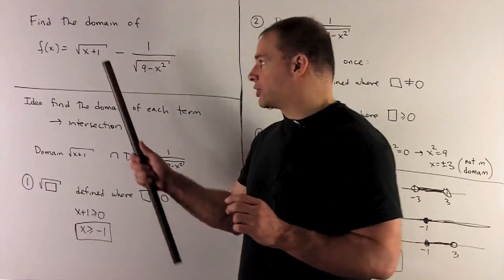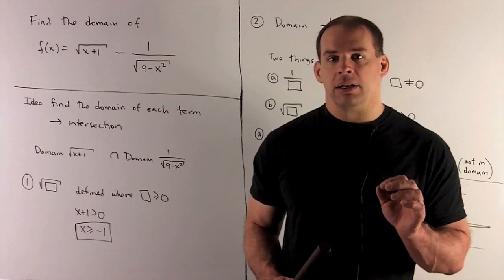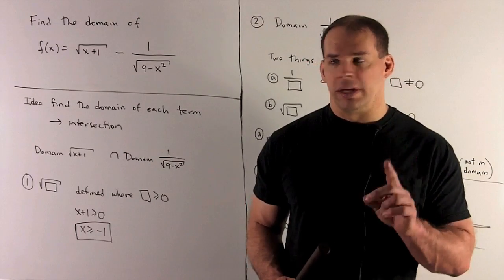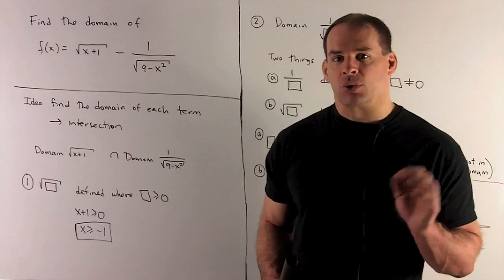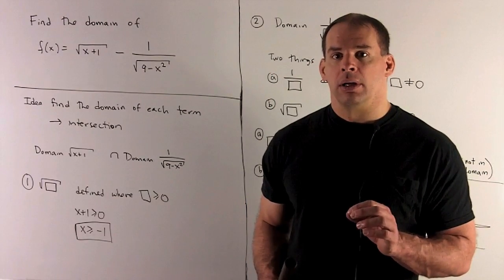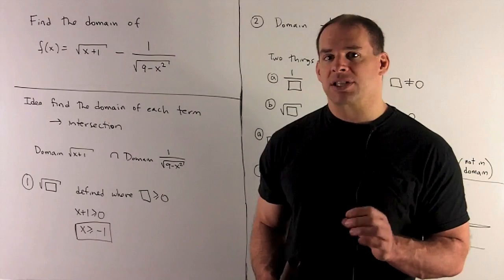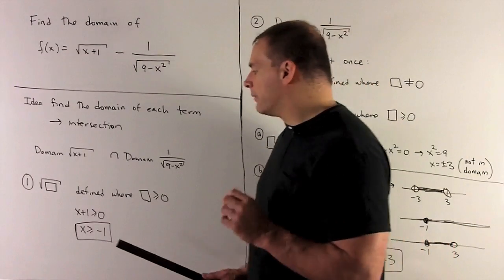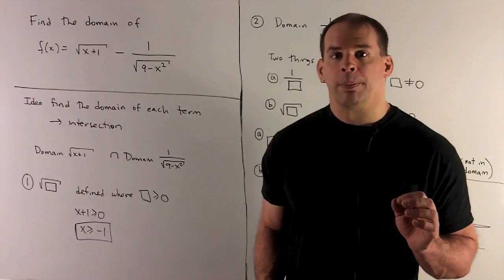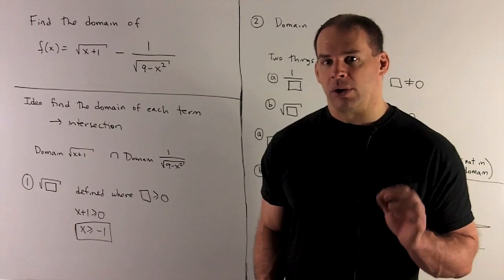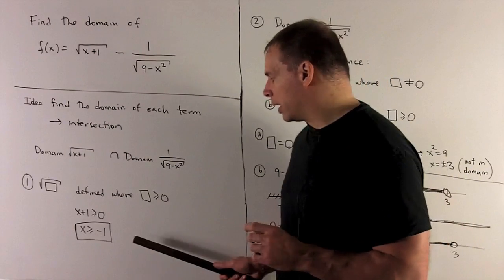For the first term, we have √(x+1). The rule is: √(box) is defined where box is greater than or equal to 0. We take x+1, put it in the box, and solve. So we're looking for where x+1 ≥ 0, which gives x ≥ -1. That's the domain of Term 1.